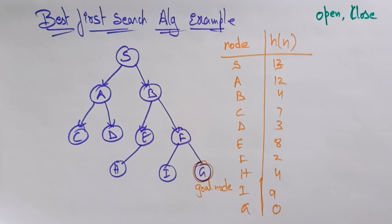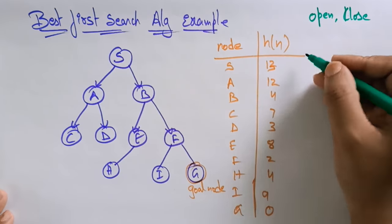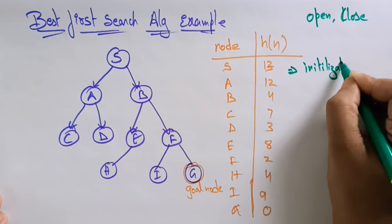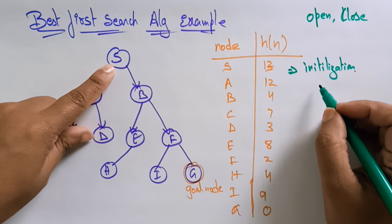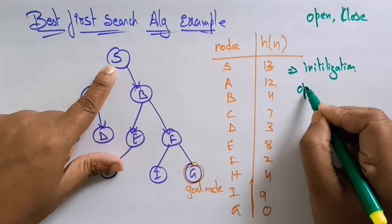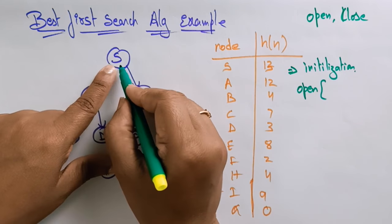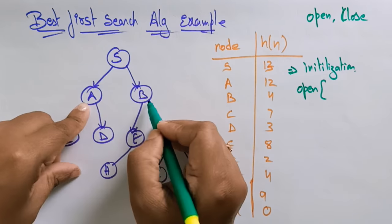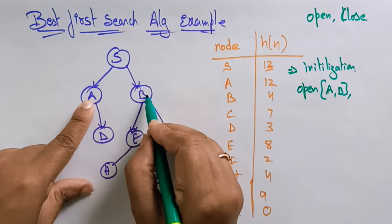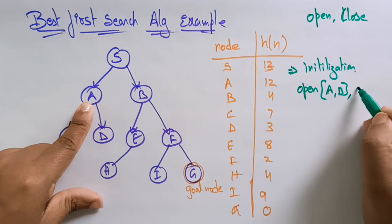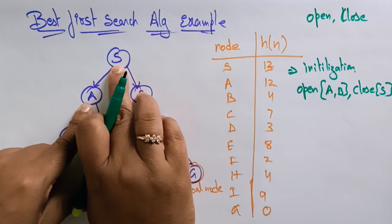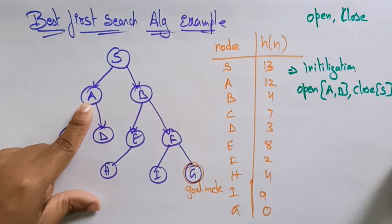Let's start with initialization. We begin from the start node S, which is the root node. The successors of S are A and B, so place A and B on the open list. Since we've moved from S, place S in the closed list.